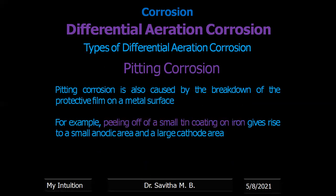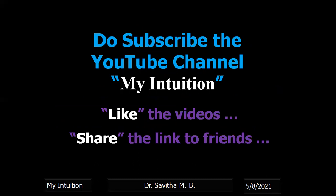Sometimes pitting corrosion also occurs due to the peeling off of a small coating. For example, if you apply a coating of tin over iron, the iron does not undergo corrosion because it is not exposed and the tin acts as a protective barrier. If a small area of the tin is peeled off, it exposes a small iron anode with a large tin cathode — and again the corrosion reaction will be very high. The loss of metal will be more. In my next video, I shall be discussing the control of corrosion. Thank you.